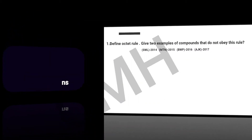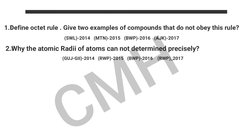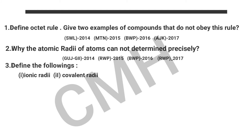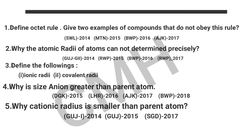Question number 1: Define the octet rule and give two examples of compounds that do not obey this rule. Question number 2: Why can the atomic radius of atoms not be determined precisely? Question number 3: Define the following — (1) ionic radii, (2) covalent radii.